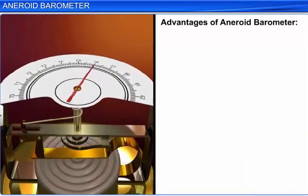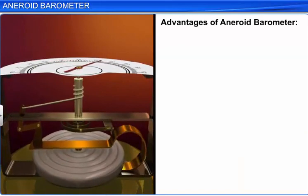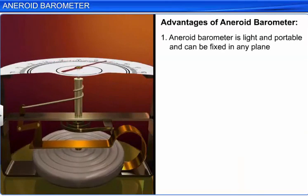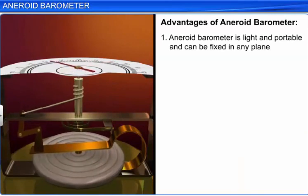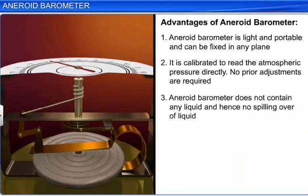Aneroid barometers have some advantages over liquid barometers. An aneroid barometer is light and portable and can be fixed in any plane. It is calibrated to read atmospheric pressure directly, so no prior adjustments are necessary. An aneroid barometer does not contain any liquid, and hence there is no fear of the liquid spilling over.